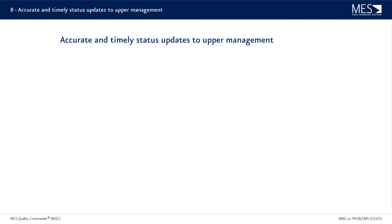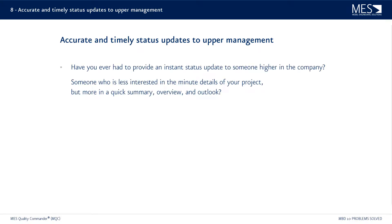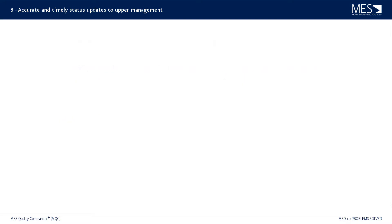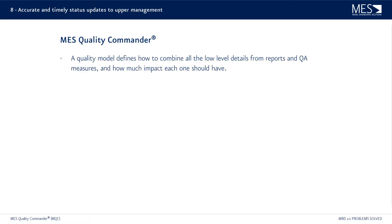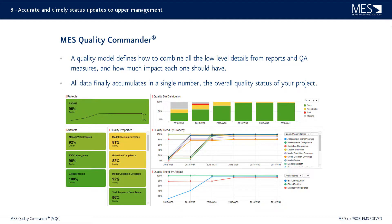Problem number eight is a related one: the need for accurate and timely status updates to upper management. Have you ever had to provide a spontaneous status update to someone higher up who is less interested in minute details and more interested in a quick summary overview and outlook? The MES Quality Commander can help here as well. The quality assessment with MQC is based on a quality model that defines how to combine all the low-level details from reports and QA measures. The data finally accumulates in a single number — the overall quality status of your project. You have detailed data, accumulated data for your artifacts and whole project, and the trend over time. A PowerPoint report can also be created quickly.